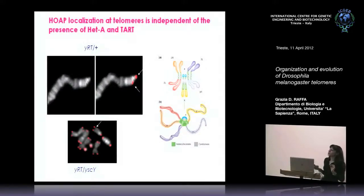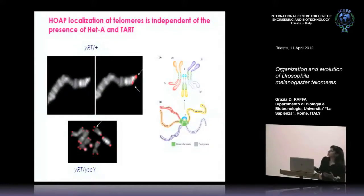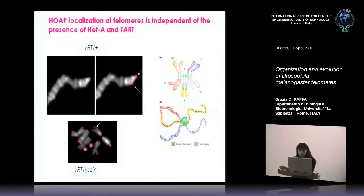In this experiment, we prepared salivary gland polytene chromosomes from flies heterozygous for a terminally deleted chromosome — an X chromosome that completely lacks the HeT-A sequences. Here you can see the wild-type chromosome and the shorter one juxtaposed. HipHop correctly localized to both chromosomes and also on mitotic telomeres, confirming that binding of HipHop is sequence independent.